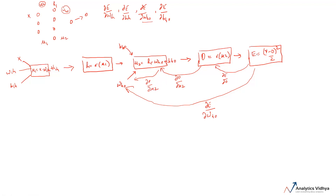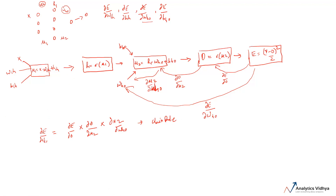This is the benefit of the computation graph: when you want to calculate change in something with respect to something else, you calculate the intermediate changes as well. So if we need to calculate ∂E/∂WHO, we calculate all the interdependencies — ∂E/∂O, ∂O/∂U2, and ∂U2/∂WHO. This is also called the chain rule of derivatives. In order to calculate ∂E/∂WHO, we will be finding out these values.